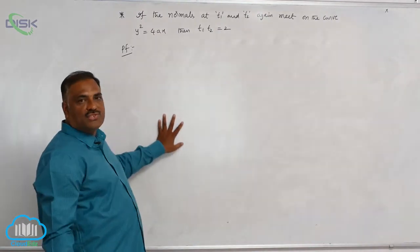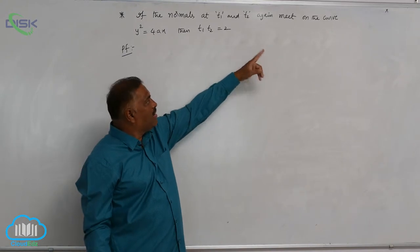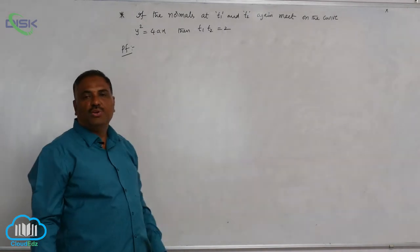We will discuss another important result. If the normals at t1 and t2 meet again on the curve y² = 4ax, we need to prove that t1·t2 = 2.